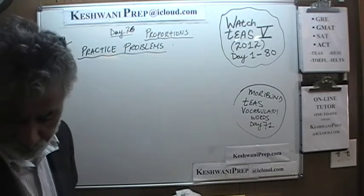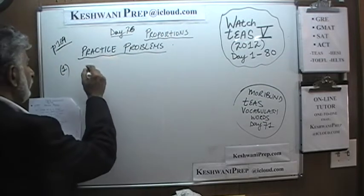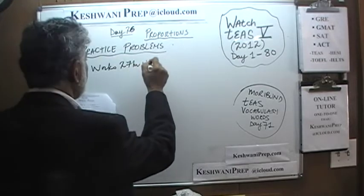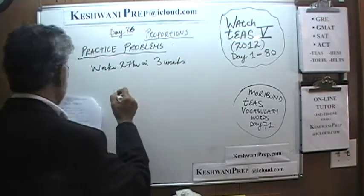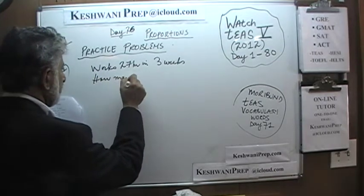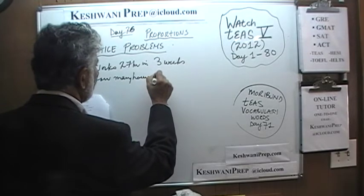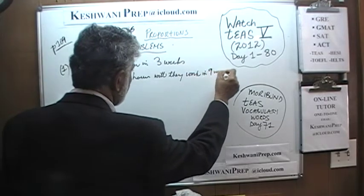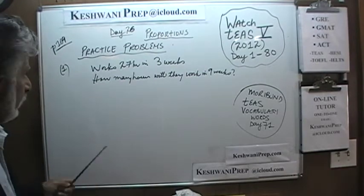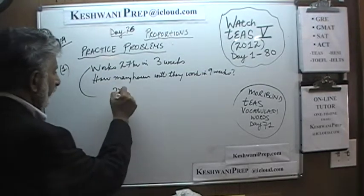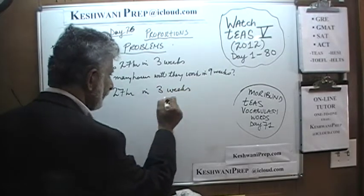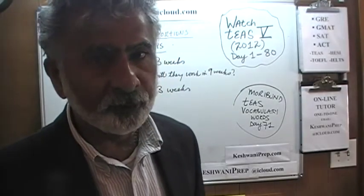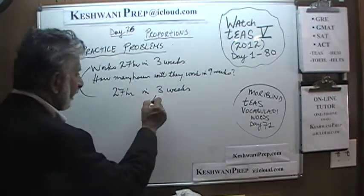There are 5 problems on the page; we are on number 1 on page 169. It says that someone works 27 hours in 3 weeks. The question is, how many hours will they work in 9 weeks at this rate? Well, let's take a look. We are told they work 27 hours in 3 weeks. We are not interested in how many hours they work in 3 weeks — we want to know how many hours they will work in 9 weeks, which happens to be a multiple of 3. Just multiply both sides by 3, that's all.